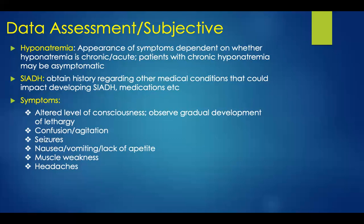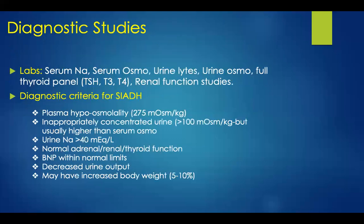Nausea and vomiting are commonly seen, as is lack of appetite, muscle weakness, and even headache. Diagnostic studies should include a serum sodium, complete metabolic panel, serum osmolarity, urine specific gravity, urine osmolarity, and a full thyroid panel including TSH, T3, and T4. The complete metabolic panel will also provide renal function results.